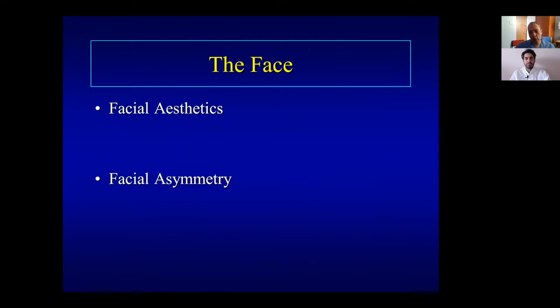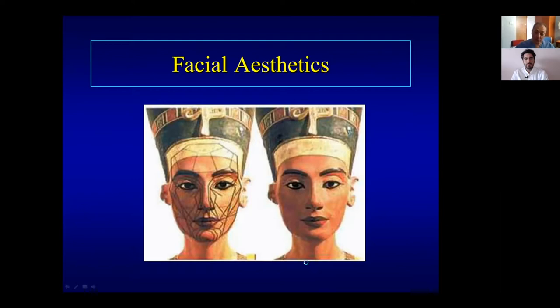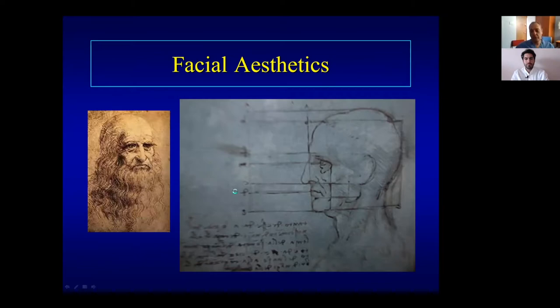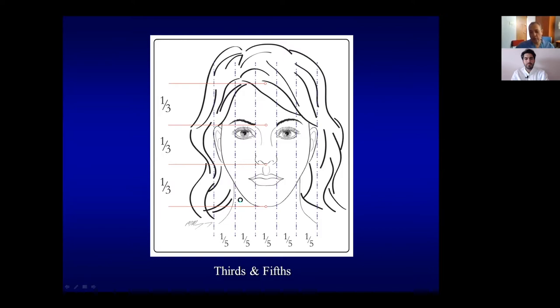Now, having discussed psychology, we move to the nose and face. You must understand facial aesthetics — the balance and symmetry of the face. Leonardo da Vinci created measurements we still use: dividing the face into vertical fifths from ear to ear (lateral canthus, medial canthus), and horizontal thirds from chin to nasal labial angle, to root of nose, to hairline. Nobody has an exactly symmetric face — slight variations are normal.